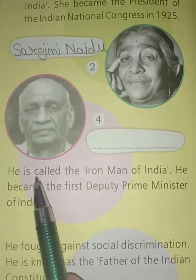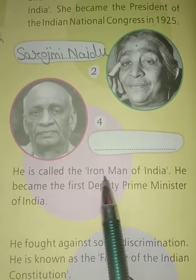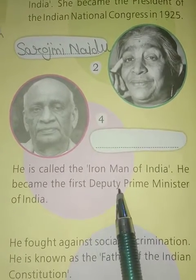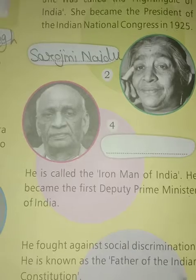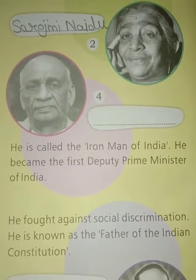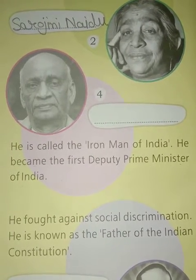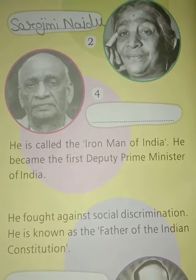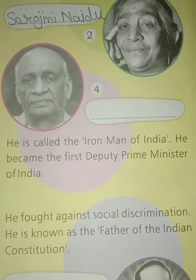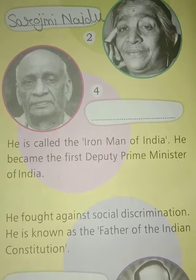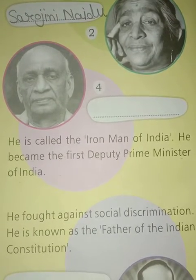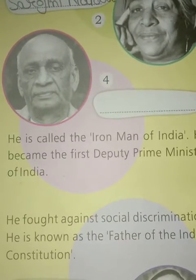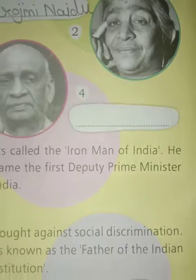Fourth: He is called the Iron Man of India and became the first Deputy Prime Minister of India. Vallabhbhai Patel was born on 31st October 1875 and is properly known as Sardar Patel. He served as the first Deputy Prime Minister of India and is also known as the Iron Man of India. The answer is Vallabhbhai Patel.